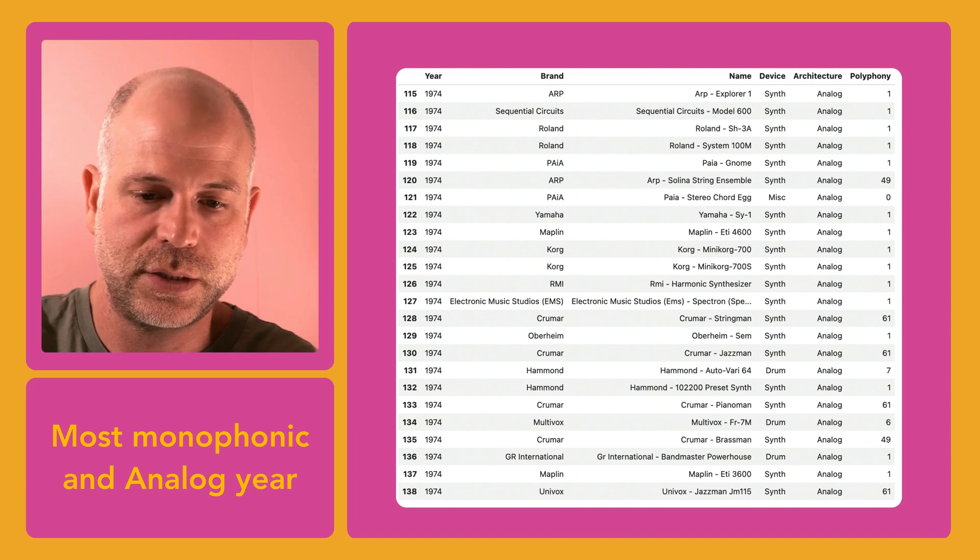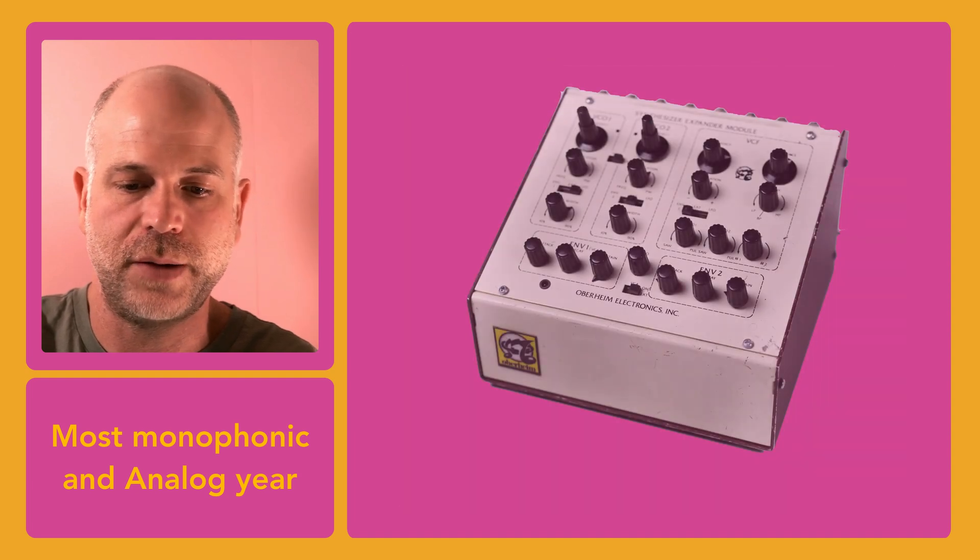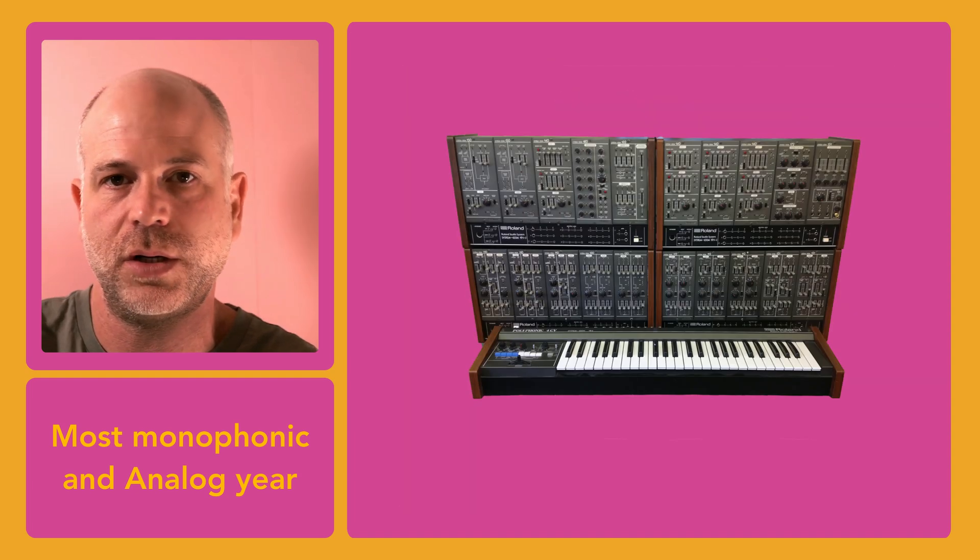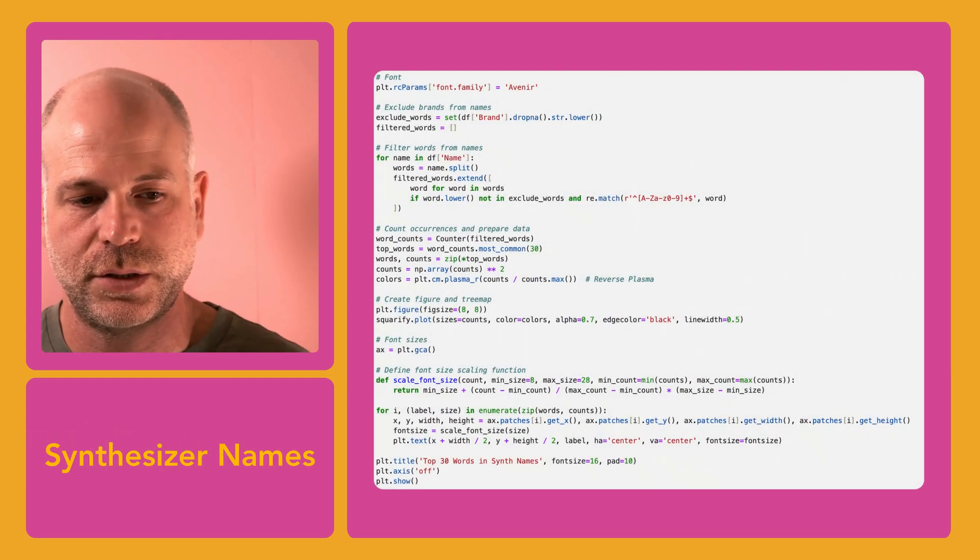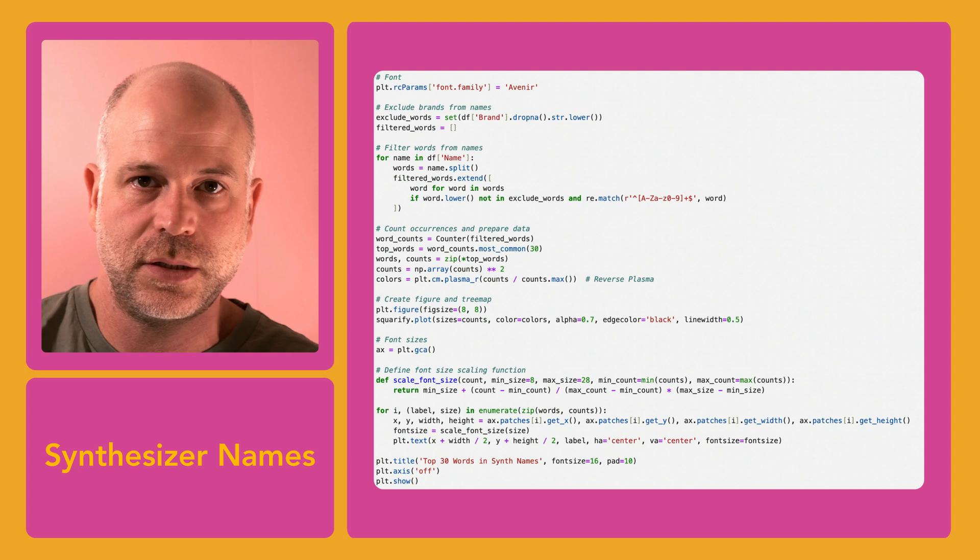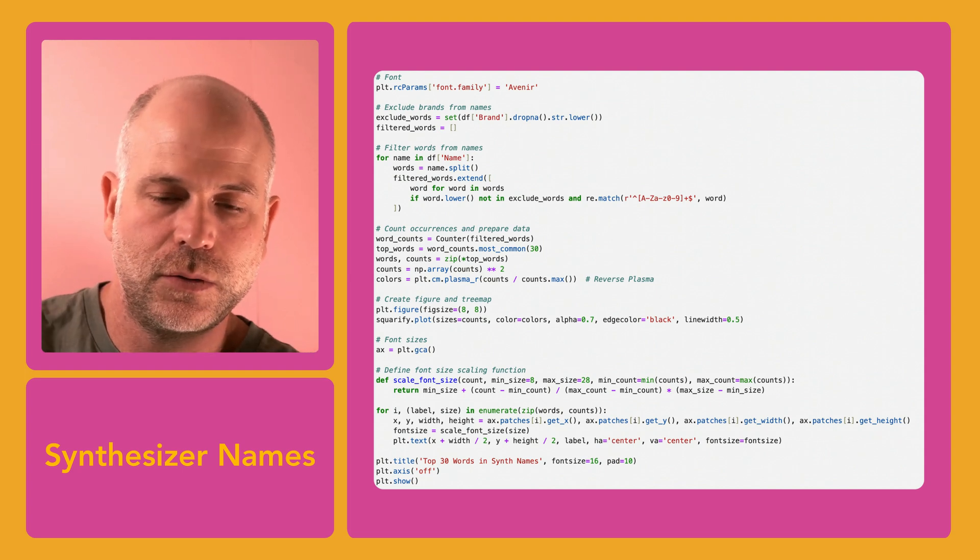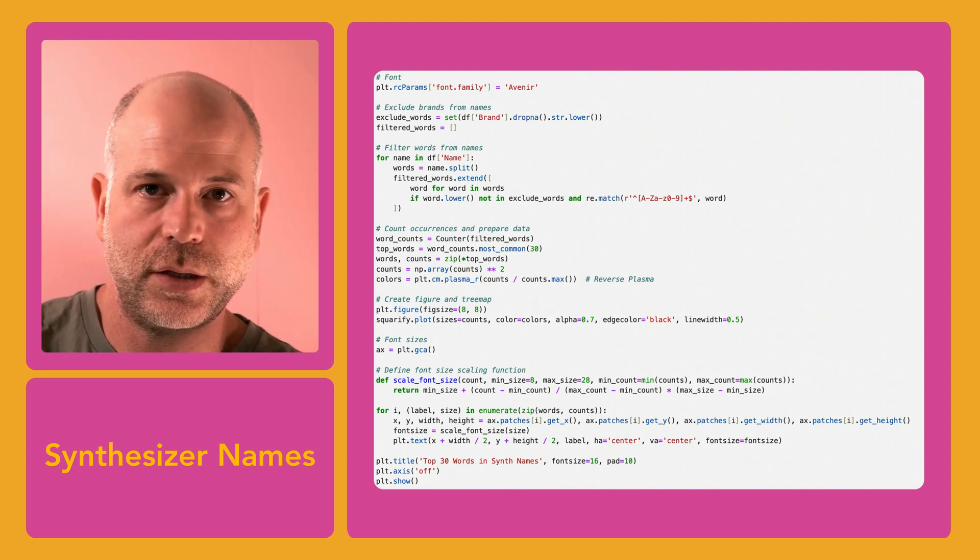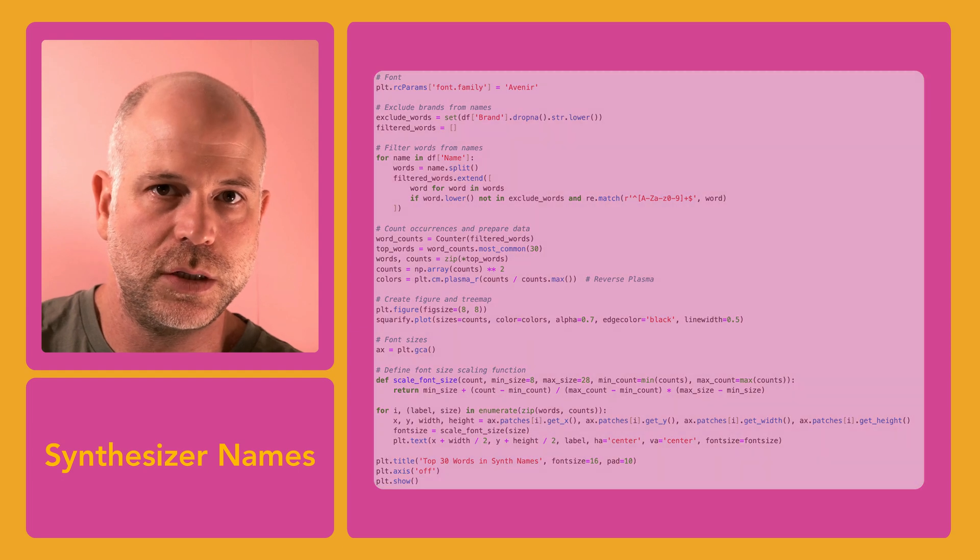The next thing I wanted to look into was synth names, and explore how are they being named and if I can see any patterns. This piece of code basically counts the words and creates a tree map of the 30 most popular words on the list.